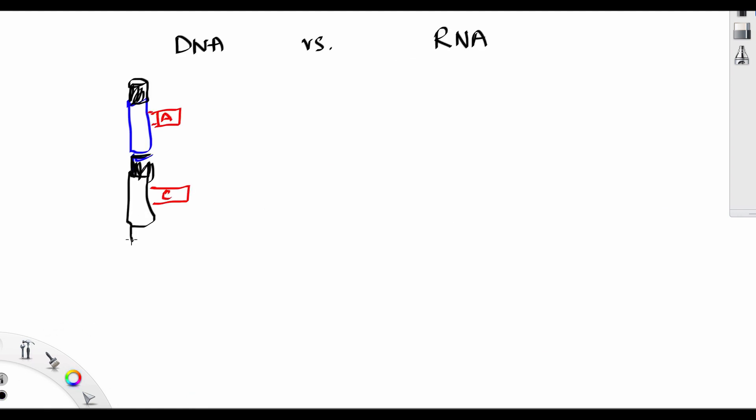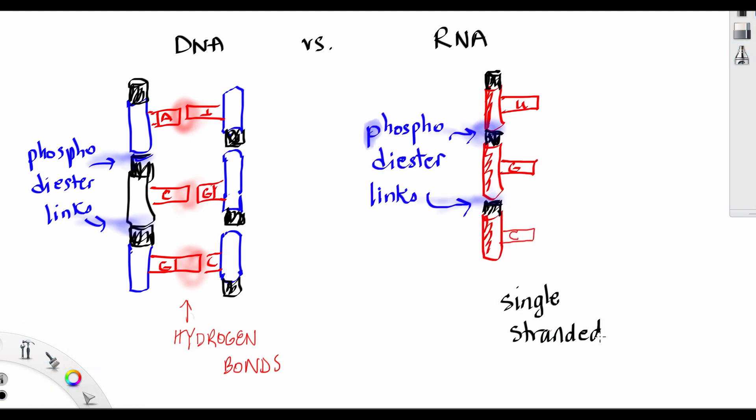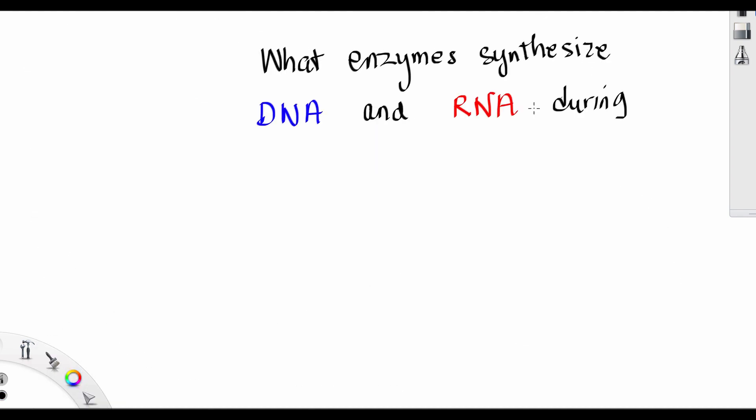So DNA versus RNA. Remember that DNA is a double strand with phosphodiester links and a hydrogen bond. And RNA is a single strand. But that single strand can be formed from the DNA.